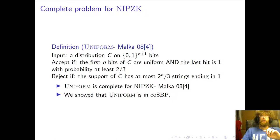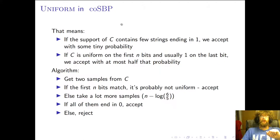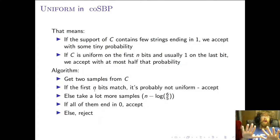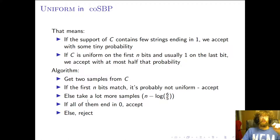We showed that you can do this problem in co-SBP. We need to accept with some tiny probability if this set is small, and accept with really tiny probability if the first N bits are uniform and the last bit is usually one. Our algorithm: first take two samples and compare the first N bits. If they match exactly, it's probably not uniform because the uniform distribution has the lowest collision chance, so we accept. Otherwise, take more samples. If every single one ends in a zero, it's probably not usually one on the last bit, so we accept. If both tests fail, we reject.